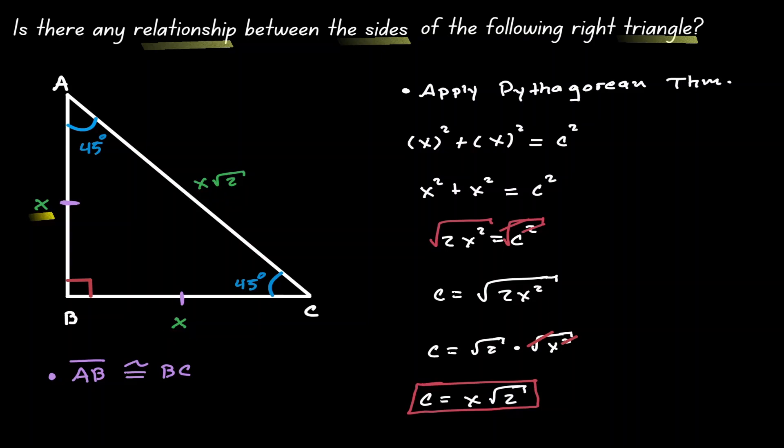We have said that the legs of this triangle are congruent, and then the leg of the hypotenuse will be square root of two times the leg of the triangle.